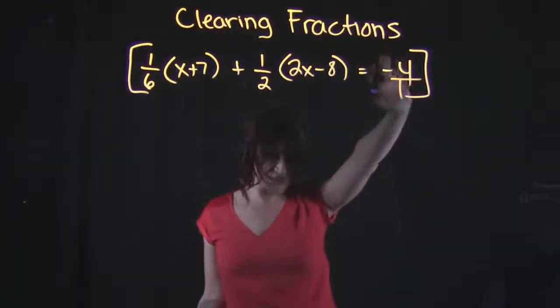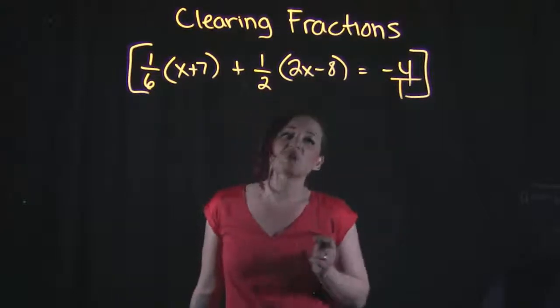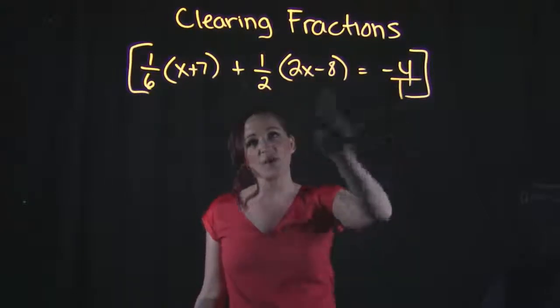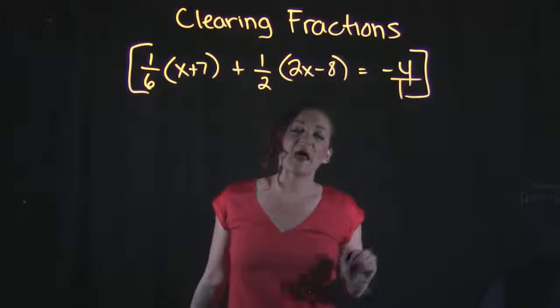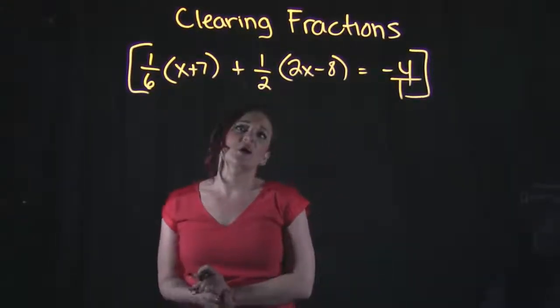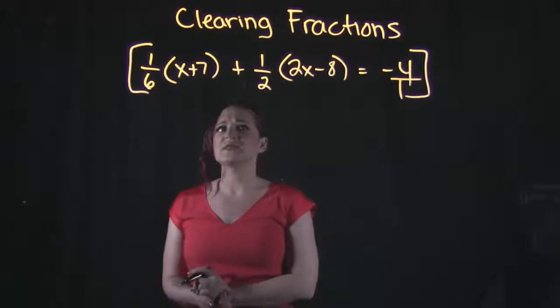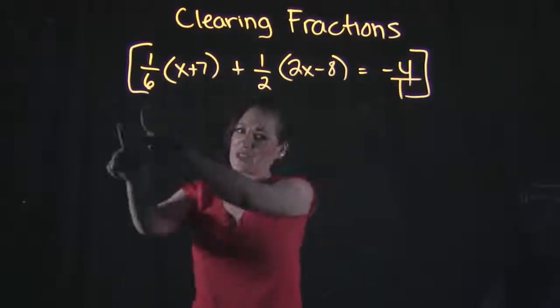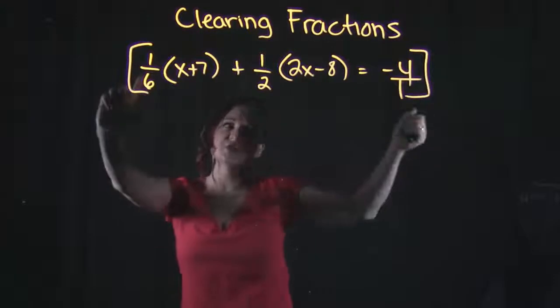Remember, you can turn any number into a fraction by putting it over one. So I'm going to find the common denominator of one, two, and six. Now, I have three different denominators I'm looking at, so typically a good method to use is to see if the two smaller numbers go into the bigger numbers. So let's check that.